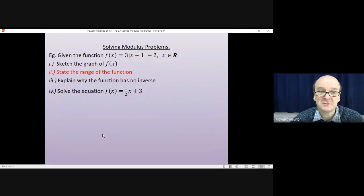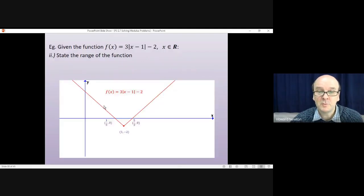Part two asks us to state the range of the function. The moment you see the word range, you have to think y values. Domain, x values. Range, y values. So we want to know exactly what values of y this function can take. They can go up to any value. There's no limit. The lines just keep heading up forever. But they come down to this point, and that's the minimum point. They come down to minus two, but no lower than that. That means the range of the function is that y can be any number, but it's got to be bigger than or equal to minus two. That's the range. That's part two.